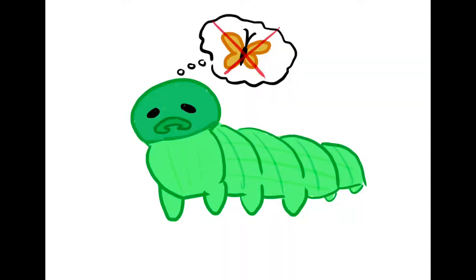The polydnavirus genes also affect other caterpillar phenotypes. For instance, the polydnavirus's viral-like particles inhibit metamorphosis, which prevents the caterpillar from entering the next stage of its life. This allows the wasp's eggs to have a consistent environment for growth.